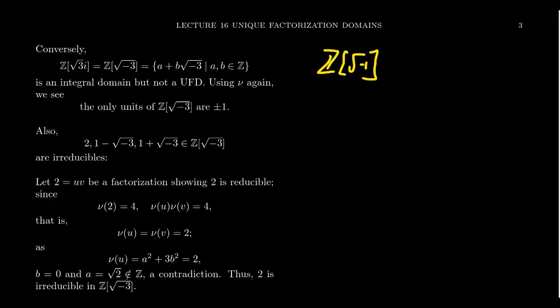Be aware that the Gaussian integers adjoin the square root of negative 1, and that gives a UFD. But if you adjoin the square root of negative 3, you don't get unique factorization. Let me show you why.